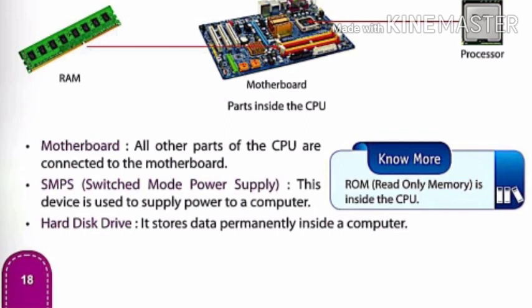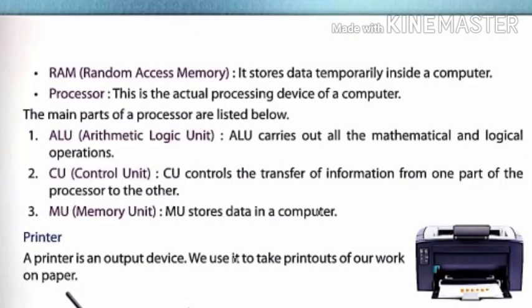Motherboard — all other parts of the CPU are connected to the motherboard. SMPS — switched mode power supply — this device is used to supply power to the computer. Hard disk drive — it stores data permanently inside a computer. RAM — random access memory — it stores data temporarily inside a computer. Processor — this is the actual processing device of a computer.